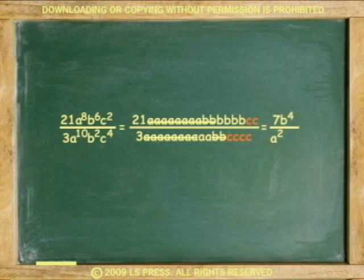For c, like for a, there are more of them in the denominator than in the numerator. Therefore, the balance of c squared is found in the denominator.